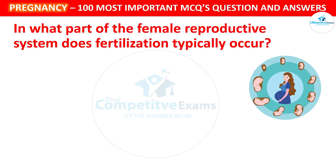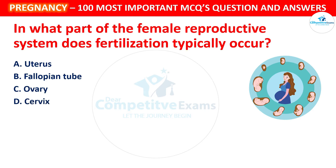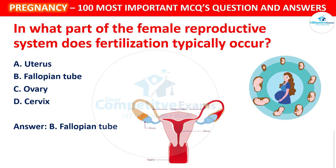In what part of the female reproductive system does fertilization typically occur? Your options: Uterus, Fallopian tube, Ovary, or Cervix. The correct answer is Fallopian tube. Fertilization commonly occurs in the fallopian tube, where the egg and sperm meet.